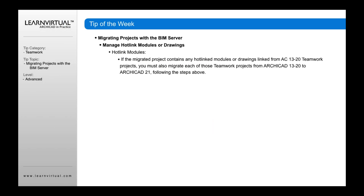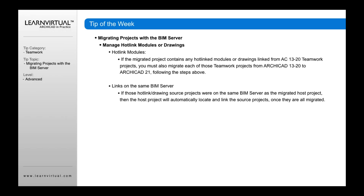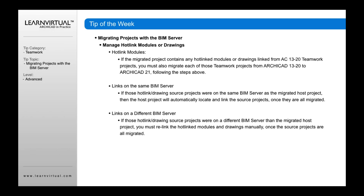Finally, you want to manage hotlinks — any modules or drawings, as mentioned earlier. If you've got older hotlinks, it's really important to follow these steps, otherwise you might end up with missing links in the process. There are hotlink modules that are external files, and there are also links to hotlink drawings that are part of the BIM server. For external hotlink modules, open them and save them in the most current version. If they're projects linked within the BIM server, make sure you also migrate any hotlink drawings or source project files that were part of that server — including any files on a different BIM server. Make sure you bring all of that into the most current server you're upgrading to.